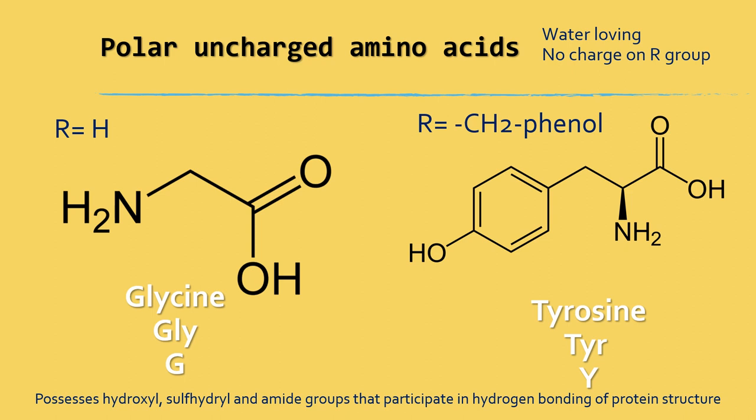The next class is polar amino acids with no charge on R group. These amino acids carry no charge on the R group, but possess groups such as hydroxyl, sulfhydryl and amide, and participate in hydrogen bonding of protein structure. The simple amino acid glycine where R is H is also considered in this category. The amino acids in this group are glycine, serine, threonine, cysteine, glutamine, asparagine and tyrosine.